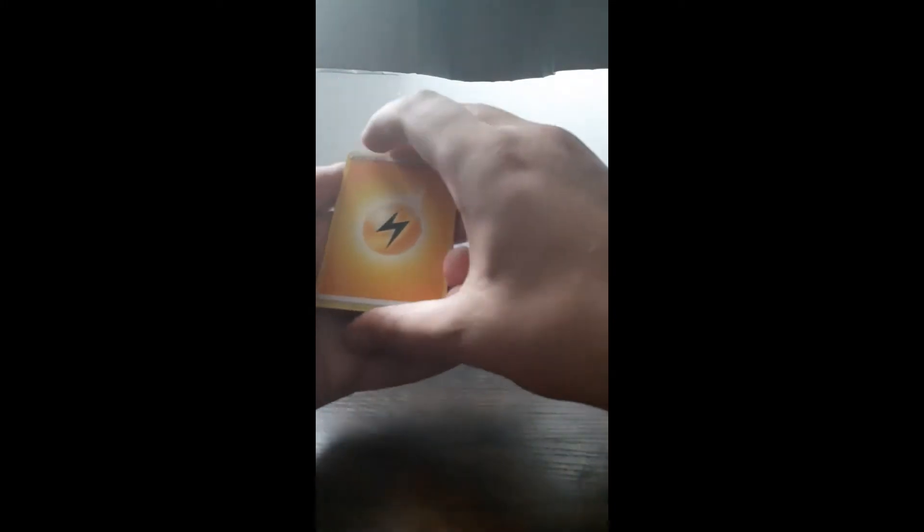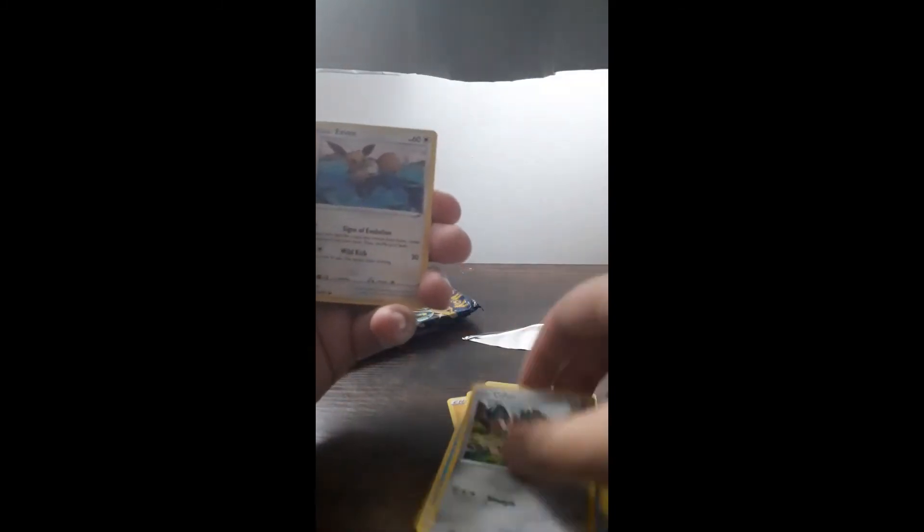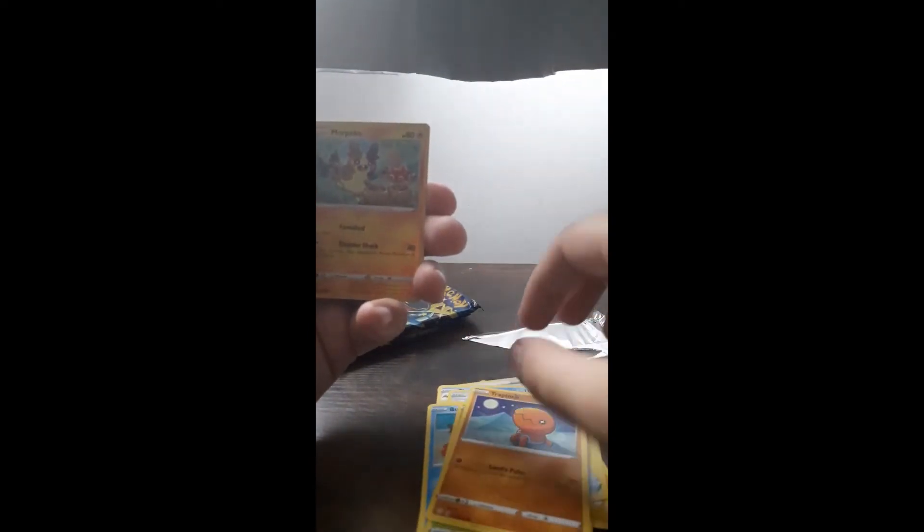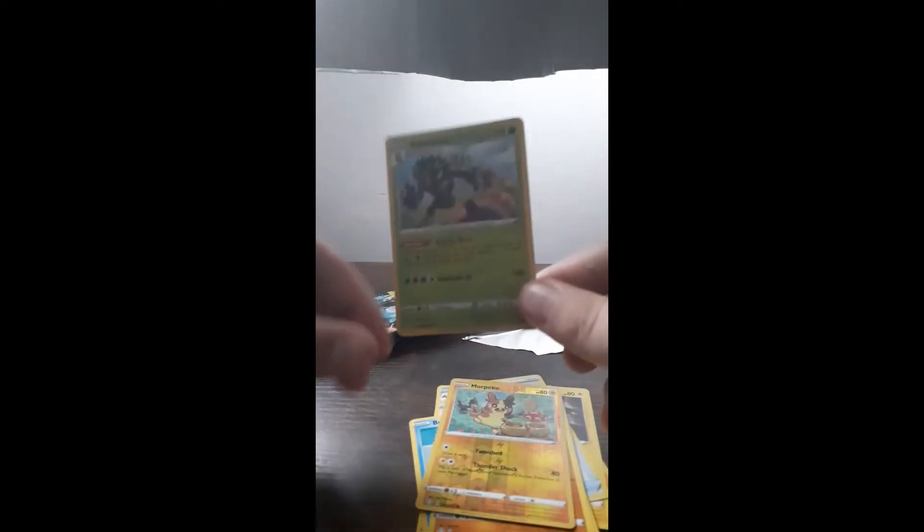Let's go again. We have a Lightning Energy into a Rotom. Rusted Sword. Volcanion. Cufant. Eevee. Weasel. Yanma. Trapinch. Reverse Holo Morpeko. Into a Rillaboom.